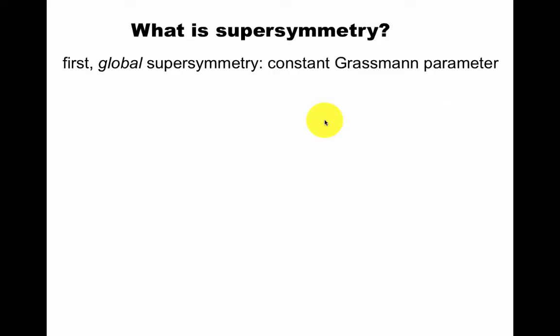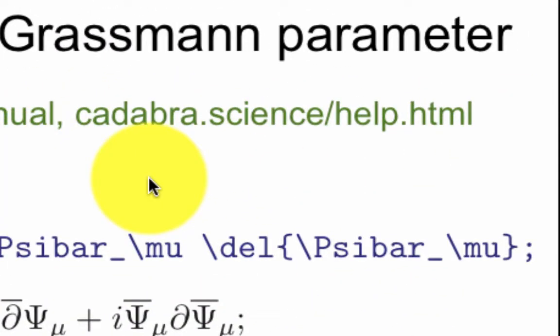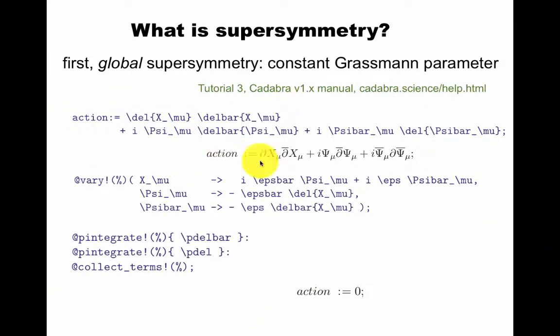So what is supersymmetry now? I just introduced a free theory of bosons and fermions. So let's first think about global supersymmetry. A supersymmetry is a symmetry with a symmetry parameter, which is Grassmann, so it's anti-commuting. To check that the super Polyakov action has global supersymmetry is pretty easy, but I'd like to take this opportunity to advertise CADABRA, which is this beautiful tool that's available to us. So you can put in the action like this, it's a slightly different convention than I had, but I think you see the point, where these are worldsheet fermions. And then you vary it using the vary command, you partially integrate, collect terms,